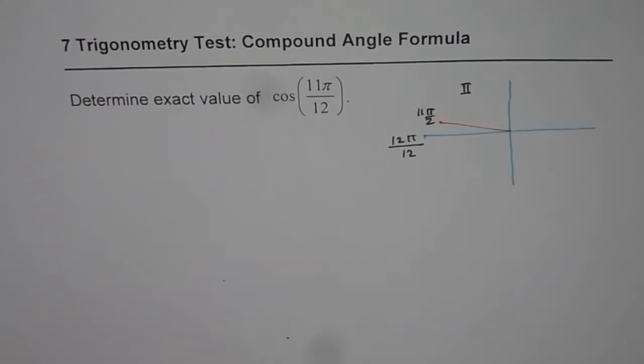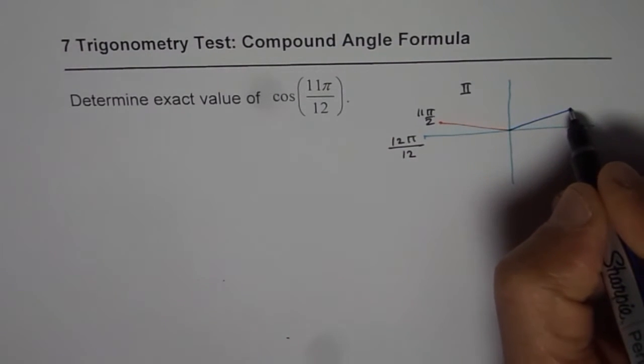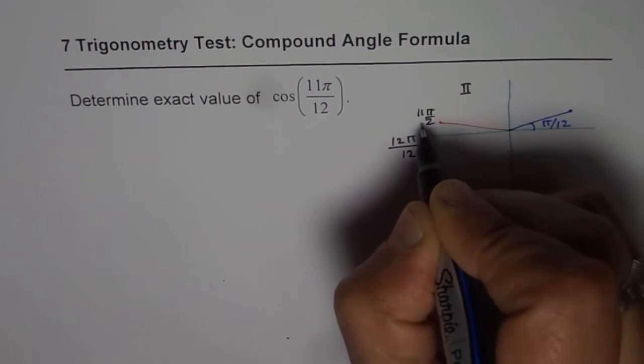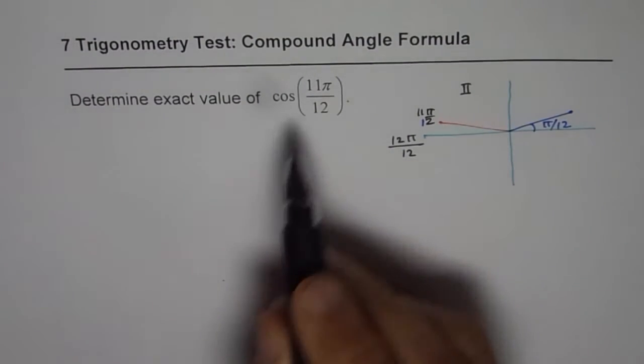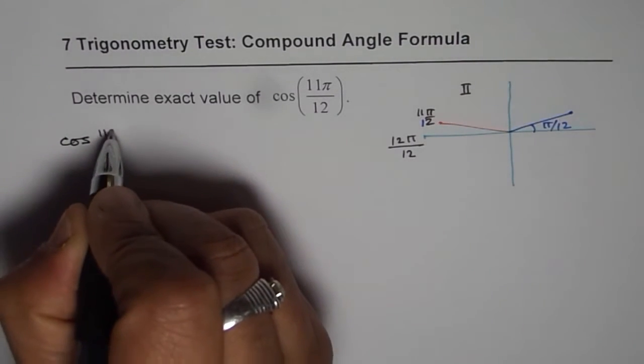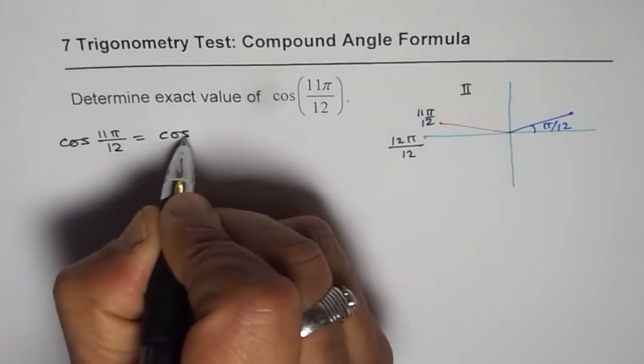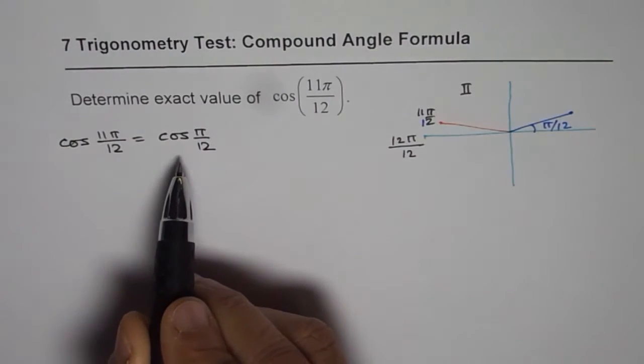So we expect a negative value for cos. Now writing this as an equivalent ratio we can think about the related acute angle as pi by 12. So what we can do at this stage is we can write cos of 11 pi by 12 as equal to cos of pi by 12. You get the point. With a negative sign.